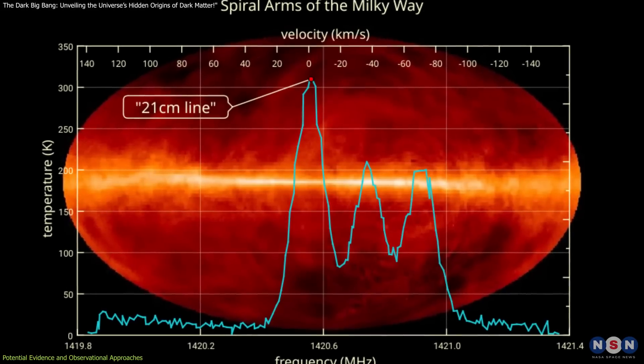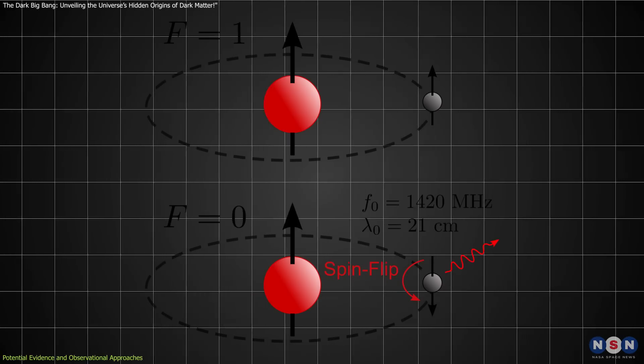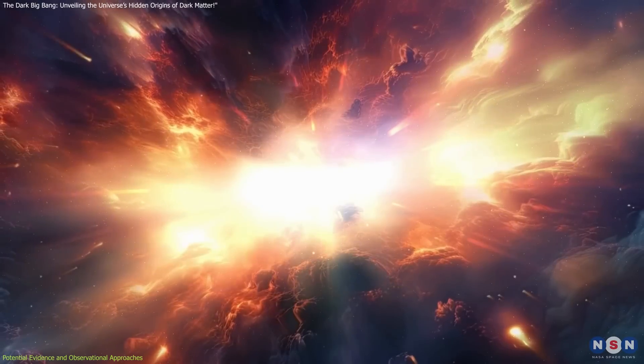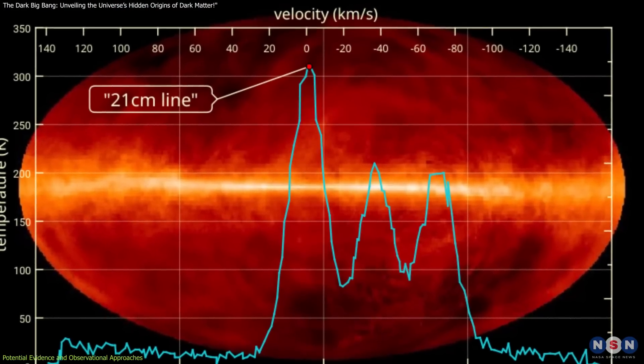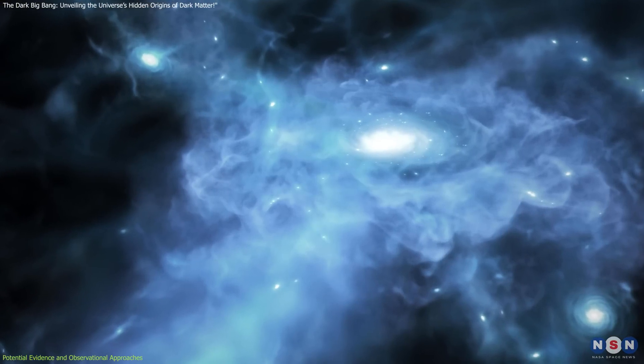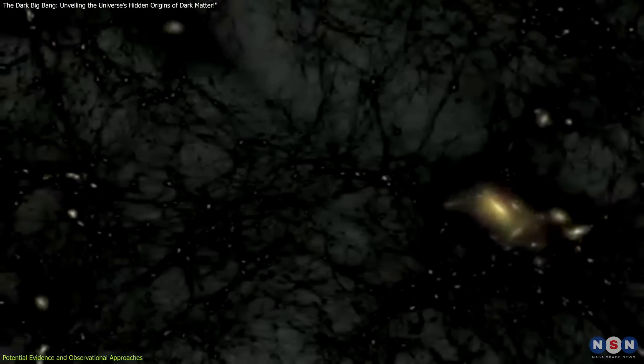Now let's discuss the 21-centimeter hydrogen line. This signal, emitted when neutral hydrogen atoms transition between energy states, acts as a time capsule from the early universe. By analyzing variations in this signal during the cosmic dawn, when the first stars and galaxies formed, scientists can infer how dark matter influenced the universe's structure.